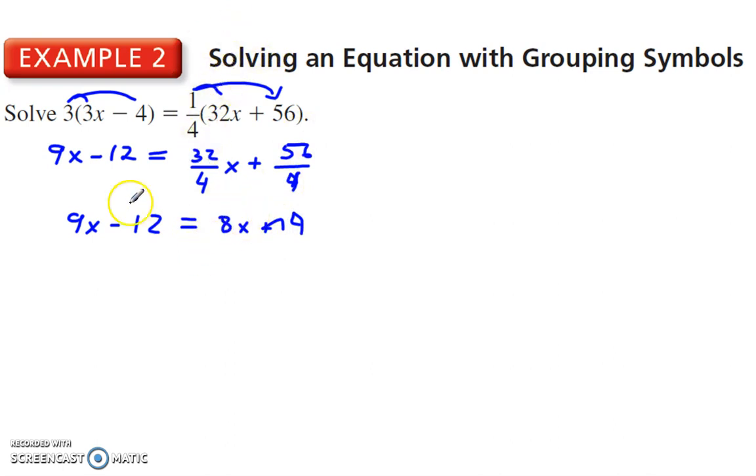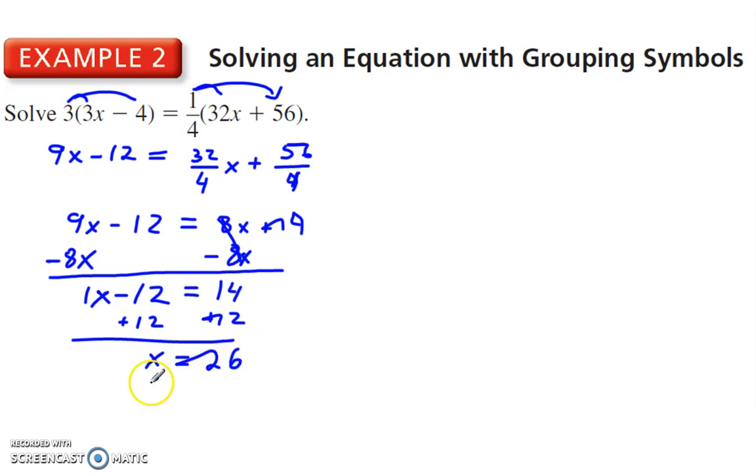I said eliminate the smaller. That's my recommendation. You don't have to, but if you do, you end up with a positive variable term. That cancels out. We get 1x minus 12 is equal to 14. Add 12 to each side, and x is equal to 26.